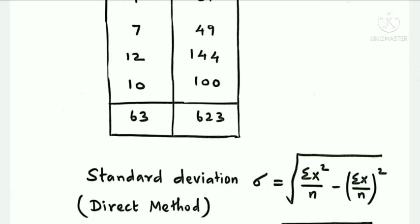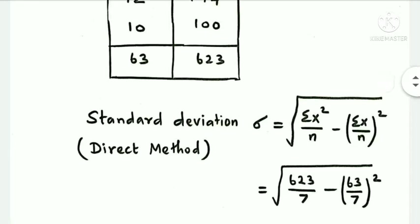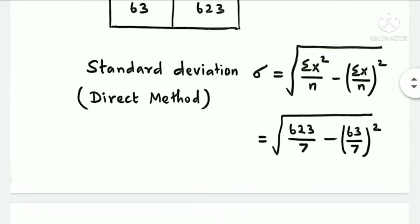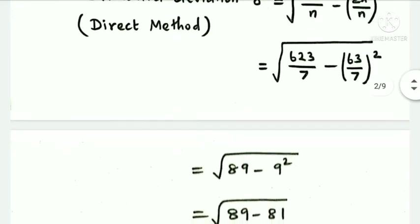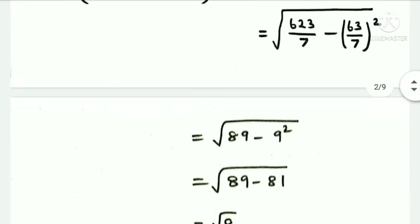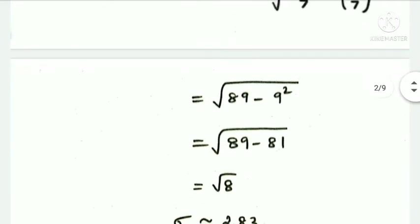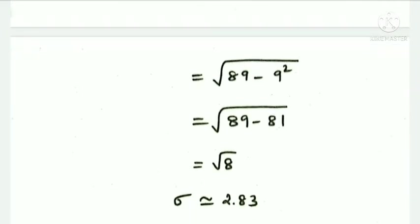Using the direct method formula: sigma equals square root of (summation x squared by n) minus (summation x by n) whole squared. That is root of 623 by 7, minus (63 by 7) whole squared, which equals root of 89 minus 9 squared, giving root of 89 minus 81, which is root of 8.